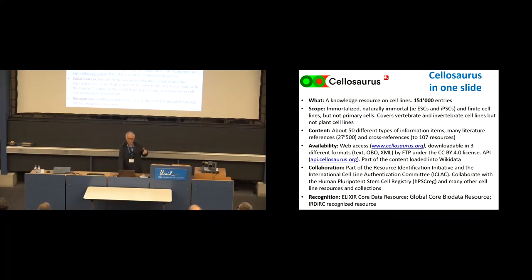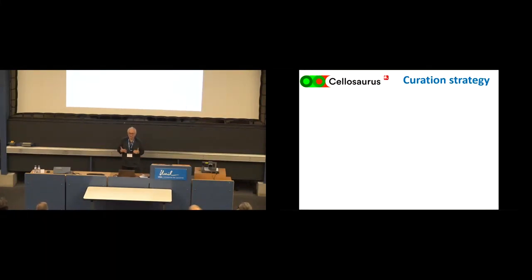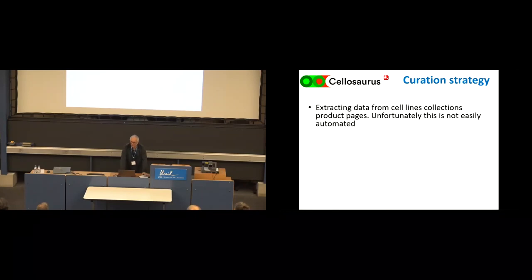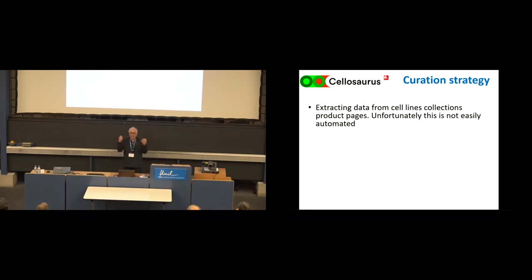There is also a new recognized resource for rare disease research. How does data get into Cellosaurus? There are four channels. The first is extracting data from cell line collections - organizations that sell and distribute cell lines generally provide a relatively good amount of information on each cell line. Unfortunately, this is not easily automated: none of the cell line collections really has a way of downloading data programmatically, to my knowledge. So you use different strategies, but it's slow and tedious.